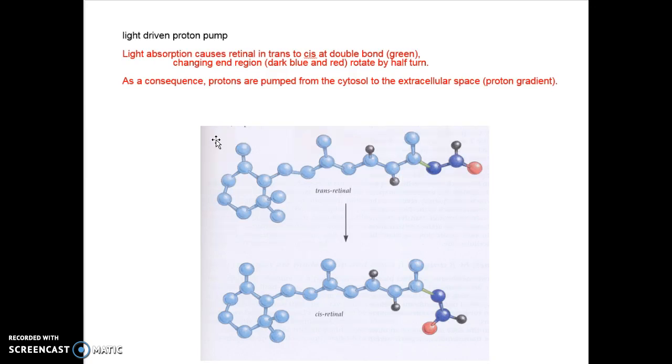Bacterial rhodopsin is a light-driven proton pump. How it works: light absorption of retinal pigment causes retinal geometry from trans to cis double bond in green region, changing the end region with dark blue and red regions rotating by half turn. As a consequence protons are pumped from the cytosol to the extracellular space, creating a proton gradient.